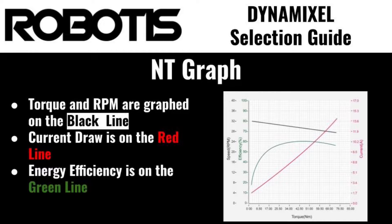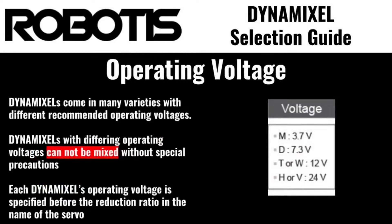An important specification requiring consideration for your application is the operating voltage. This defines the recommended input voltage for each model of Dynamixel actuator, which ranges from 5 volts for the XL330 all the way up to 24 volts for the industrial P-Series Dynamixels.